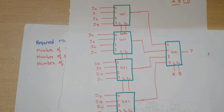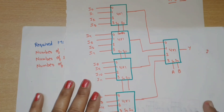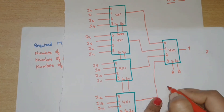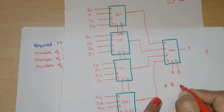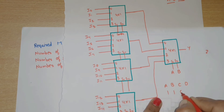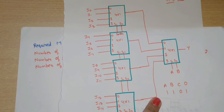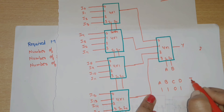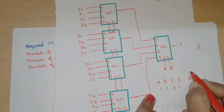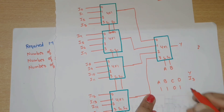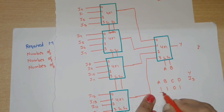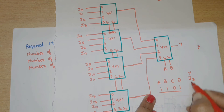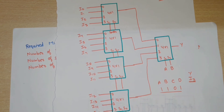Now I will explain with an example. Suppose A, B, C, D equals 1, 1, 0, 1. The decimal equivalent is 13. This means we need output Y to come from input I13. If we give this combination, let's verify we get I13.